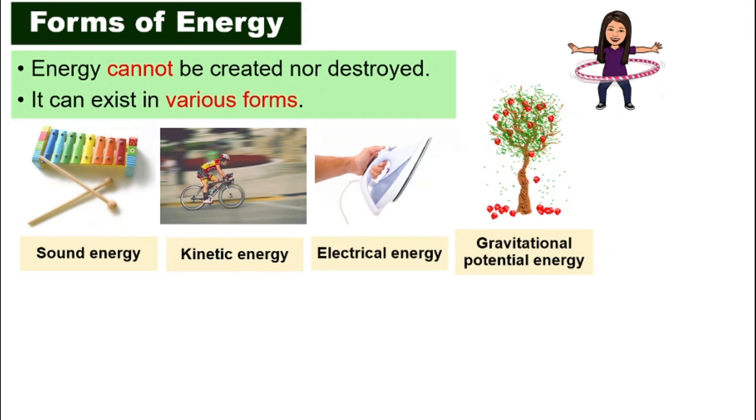Gravitational potential energy is possessed by anything, an object because of their location. When there's a height, there is gravitational potential energy. For example, a durian hanging on a tree or a book that is sitting on your desk.